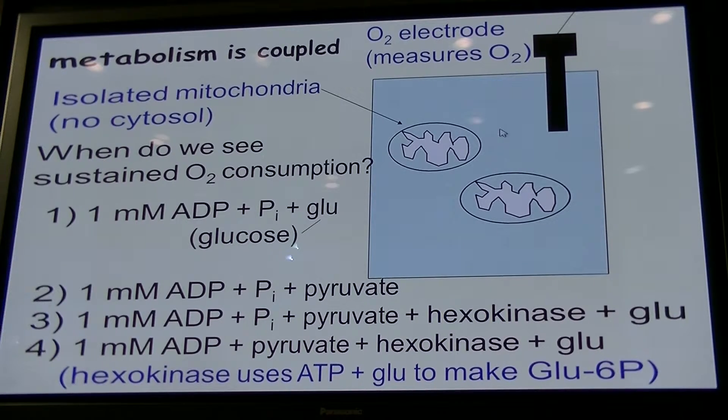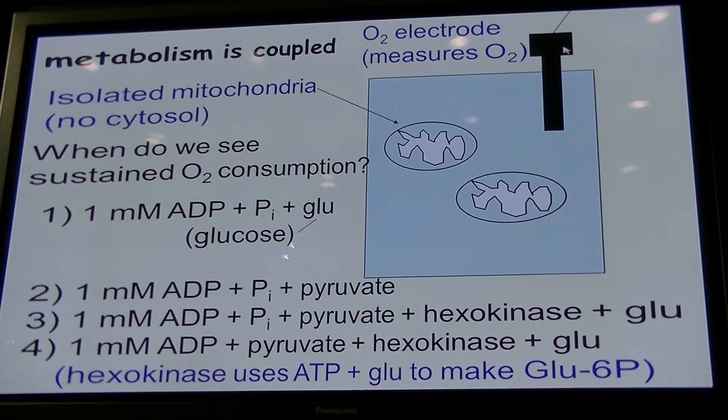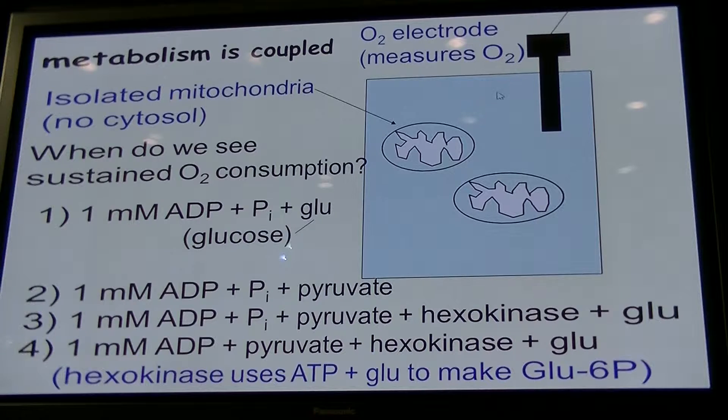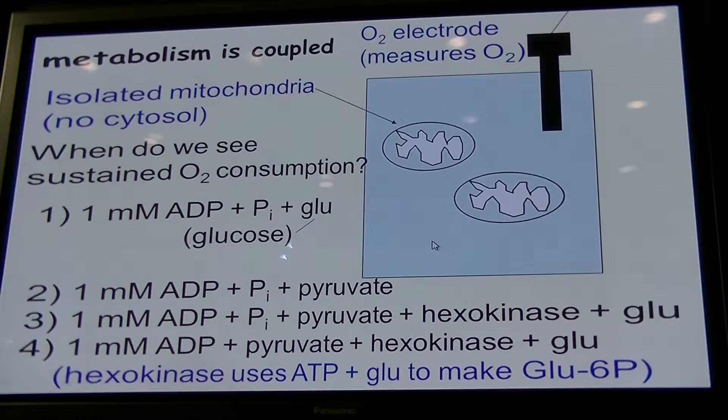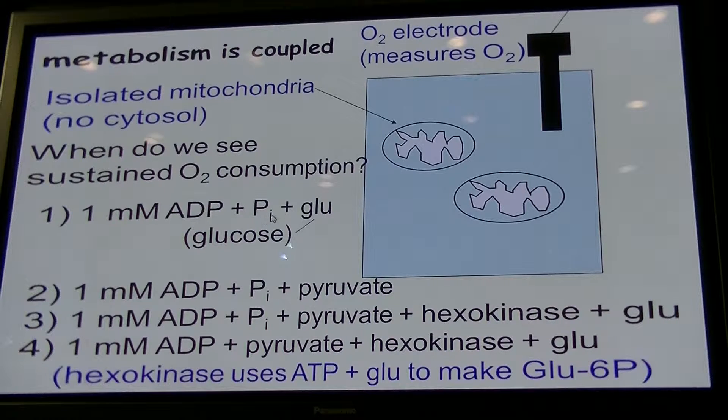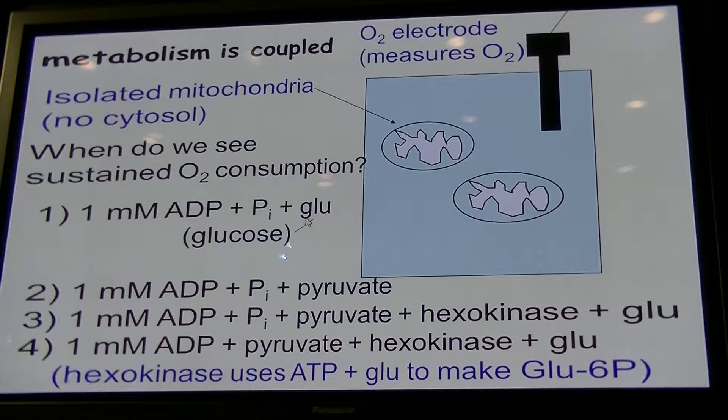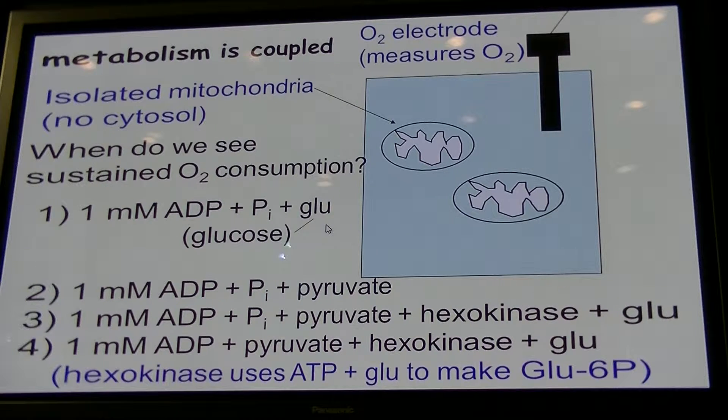For instance, if we once again isolate mitochondria, that means there's no cytosol. And we're measuring oxygen consumption here, which we can measure. So when do we see the best sustained oxygen consumption? If you give ADP and inorganic phosphate, that is a good idea. But if you give glucose as a substrate, that won't do anything because glucose, if we isolate the mitochondria away from the cytosol, it's not broken down to pyruvate.